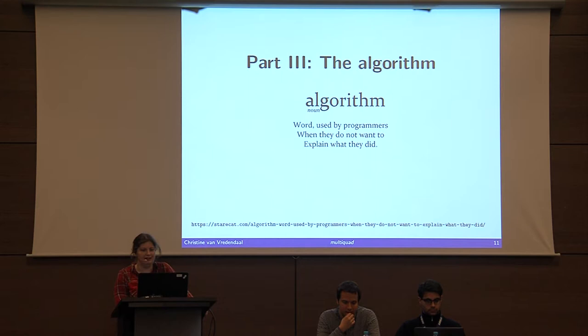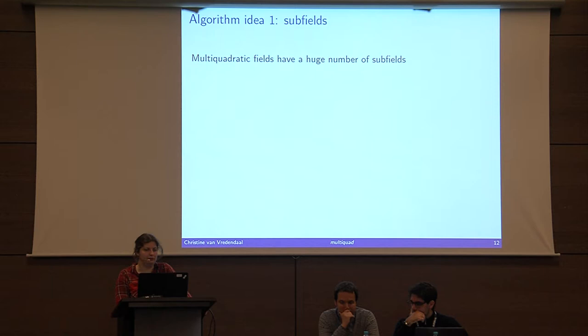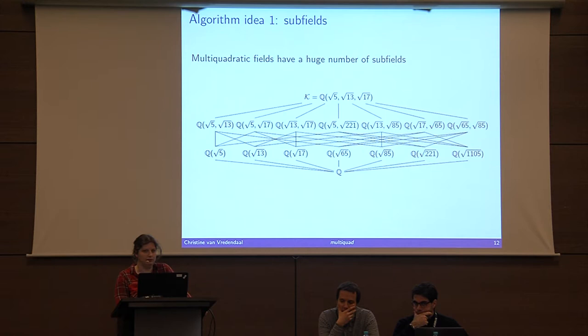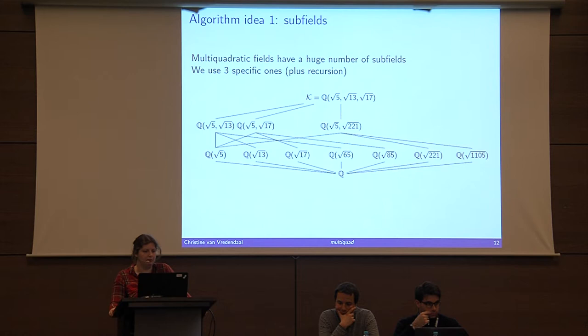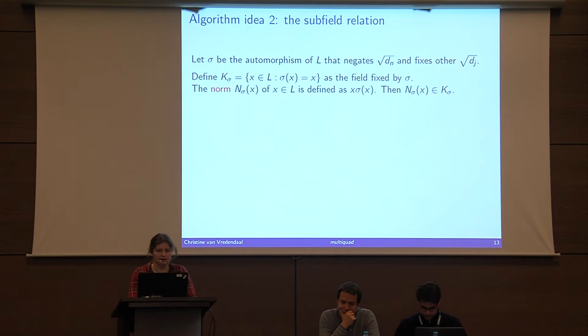Our algorithm is based on four ideas. The first reason we chose multi-quadratic fields is that they have a huge number of subfields. Even for three adjoined square roots you get a large graph of subfields, and we only need three of them plus recursion. This grows bigger pretty quickly.